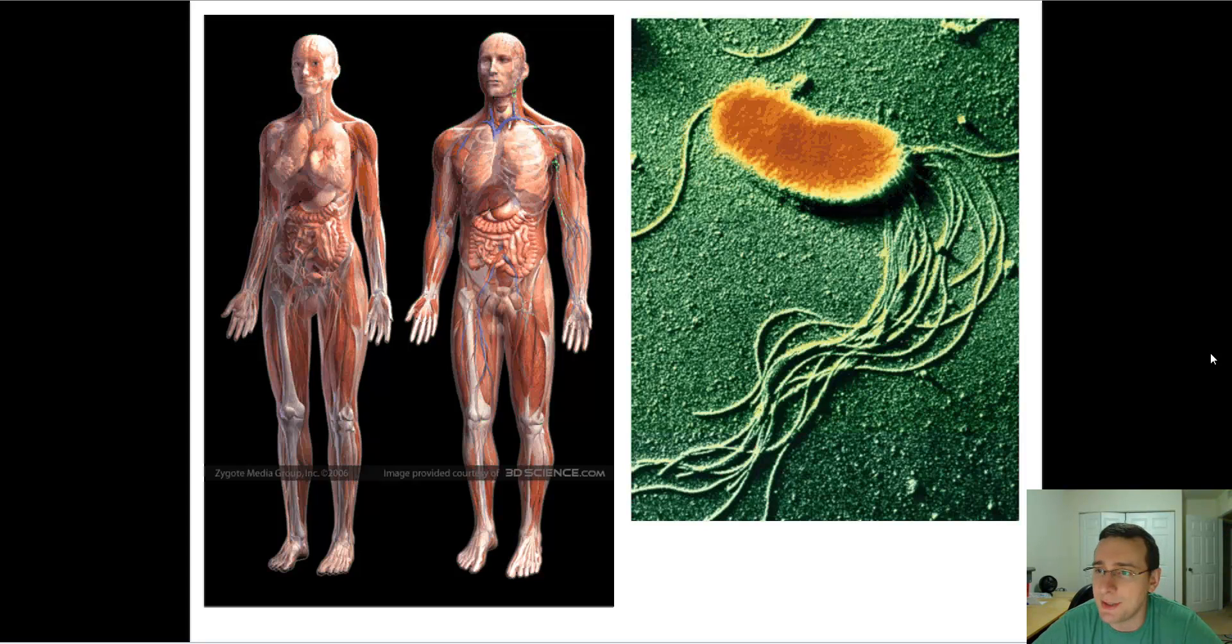Small things like this bacteria that required a very powerful microscope to take such a good close-up picture of it, and things like you and me, human beings, perhaps the most advanced type of life form on Earth. Both are organisms. Tiny microscopic unicellular organisms or complex multicellular organisms with multiple subsystems. Both are alive.